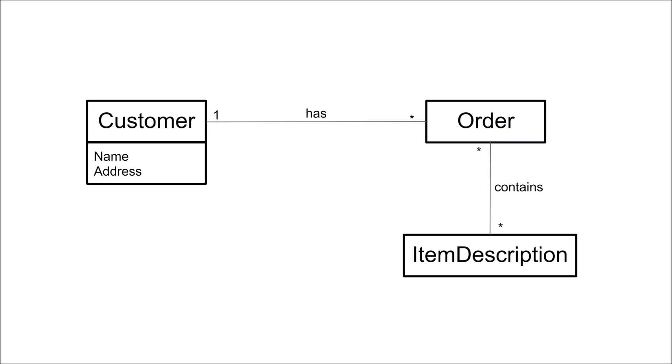An association is something that we need to remember over time to fulfill the requirements. In this case we are looking at some kind of e-commerce system where customers have orders, and you can imagine it would not be good to lose orders. So we need to remember which customer has which orders and the item descriptions contained inside the order, so that we can ship the correct items to the customer.